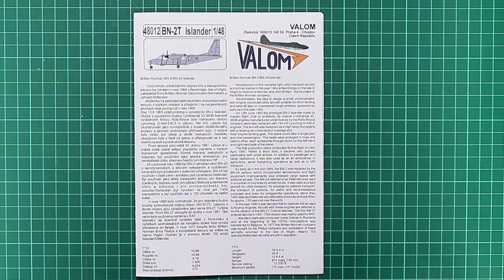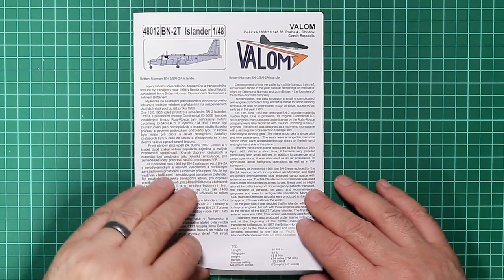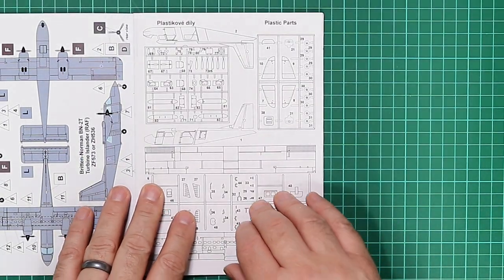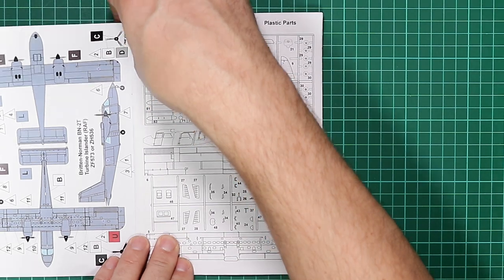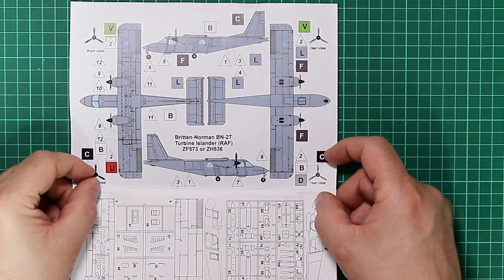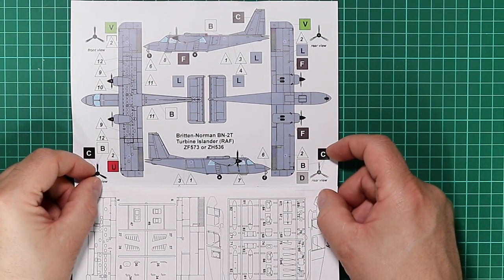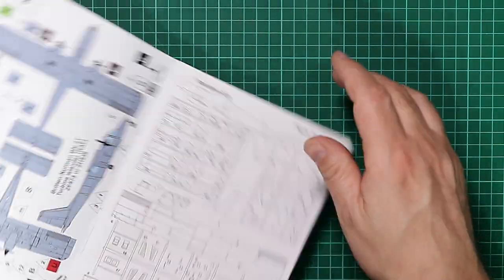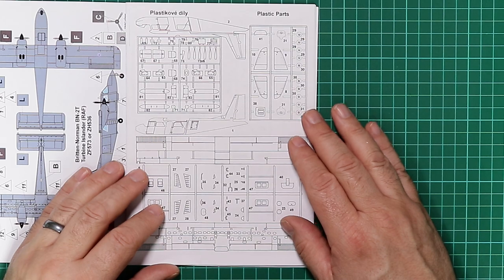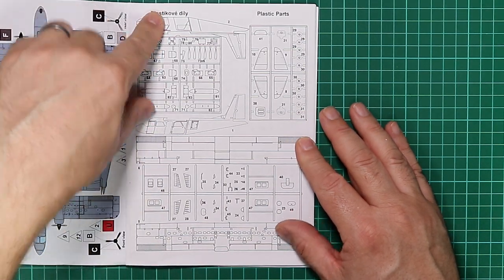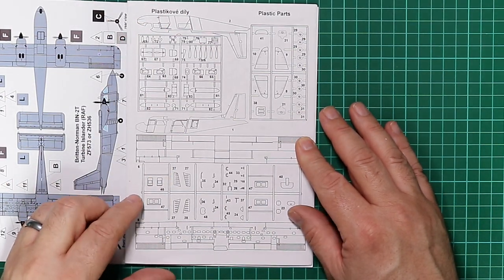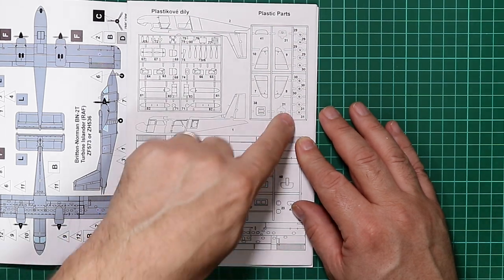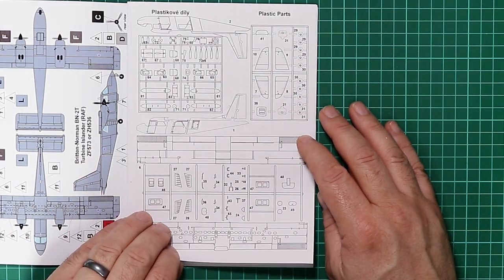Opening the booklet, we've got paint diagrams for two of the marking options included, which is ZF573 or ZH536. And opposite, we have the sort of basically sketched out sprue parts map. These are numbered, so I'm going to assume that in the kit they're not, so we'll have to have a look and check.